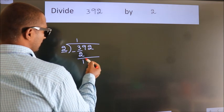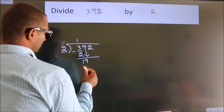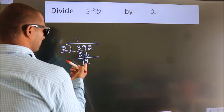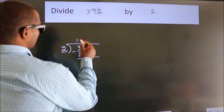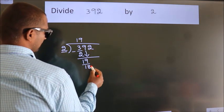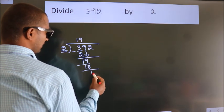After this, bring down the beside number. So 9 down. So 19. A number close to 19 in 2 table is 2 nines 18. Now we subtract. We get 1.